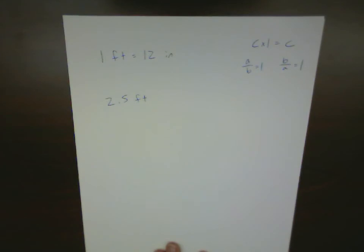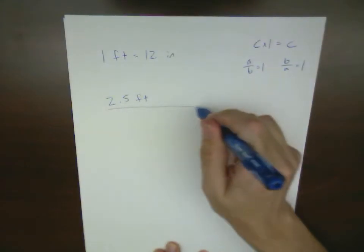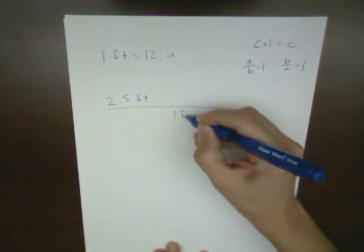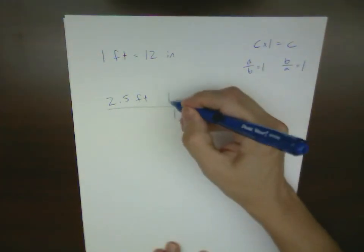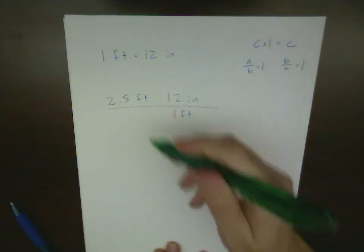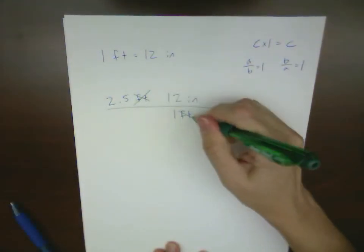So if I've got 2.5 feet, what I really want to do is make sure that my 1 foot is on the bottom, my 12 inches is on the top. What's going to happen then is that my feet in the numerator and the denominator are going to cancel each other out.